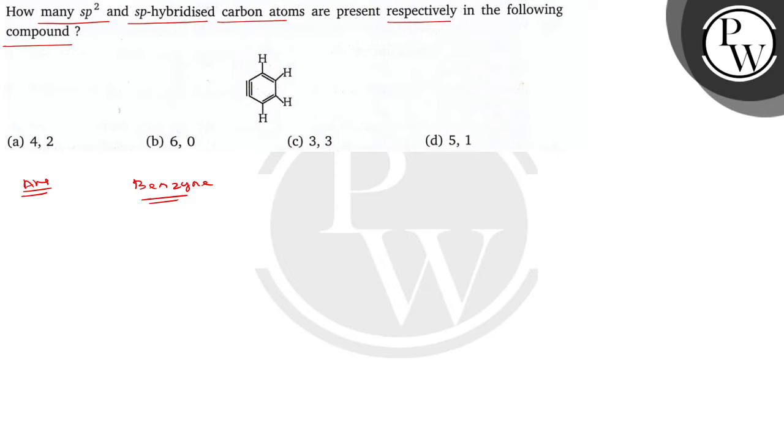If you see the C double bond C in the benzyne ring, the sigma bond is formed by the overlapping of sp2 carbon orbitals.